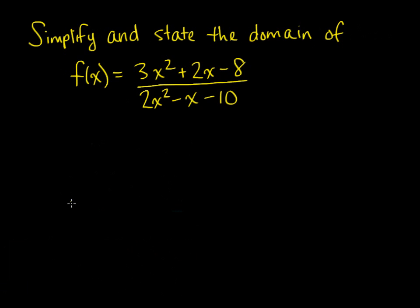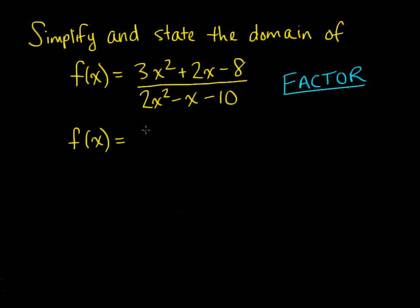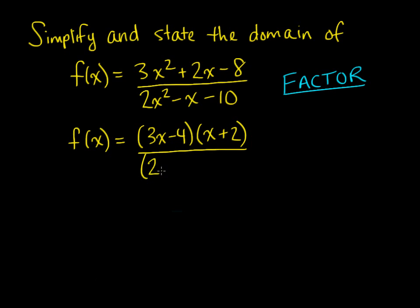Here's an example where we're dealing with a rational function, and we want to simplify and state the domain of f(x). In order to simplify the expression on the right-hand side, we want to make sure everything is in factored form first — this is very important. So we factor both the numerator and denominator. Factoring the numerator gives us (3x minus 4)(x plus 2), which expands to 3x squared plus 2x minus 8. In the denominator we get (2x minus 5)(x plus 2), which expands to 2x squared minus x minus 10.